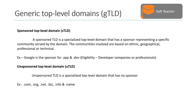The communities involved are based on ethnic, geographical, professional, or technical criteria. For example, .app or .dev — these two extensions are sponsored by Google, and to get this extension the eligibility is developer companies or professionals.